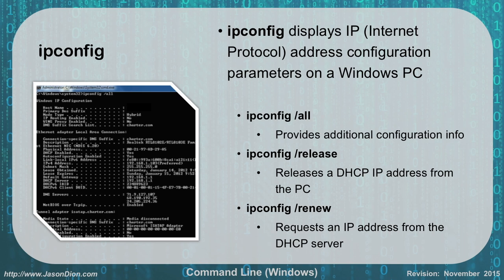The information shown by ipconfig /all includes the MAC address (listed as the physical address), whether DHCP is enabled, whether auto-configuration is enabled, the IP address pulled (in this case 192.168.1.103), the subnet mask (255.255.255.0), when the DHCP lease was given and when it expires — in this case one-day leases — the default gateway, the DHCP server, any IPv6 address, DNS servers, and whether NetBIOS is enabled. Running ipconfig without the /all switch gives you only your basic IP address without MAC address, DNS, gateway, and other details.